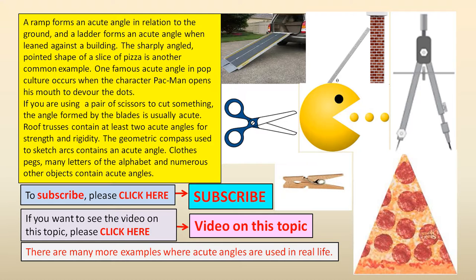Roof trusses contain at least two acute angles for strength and rigidity. The geometric compass used to sketch arcs contains an acute angle.